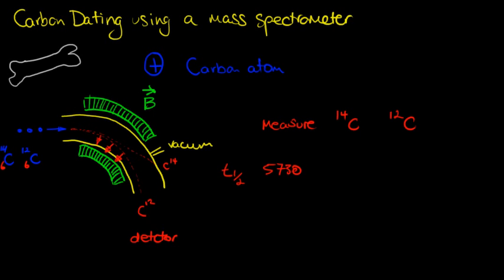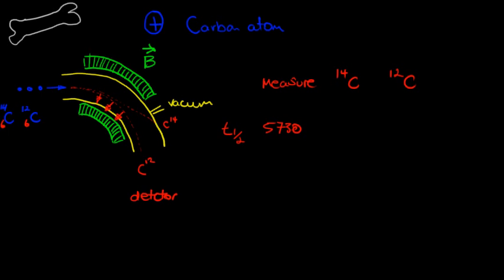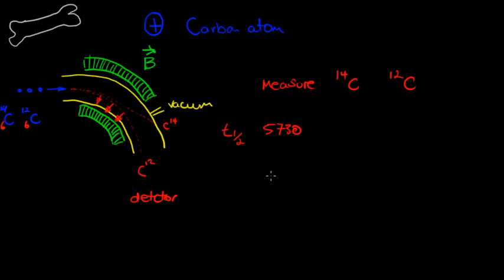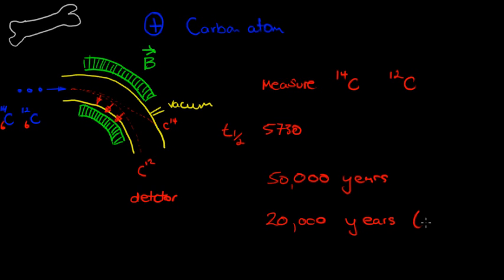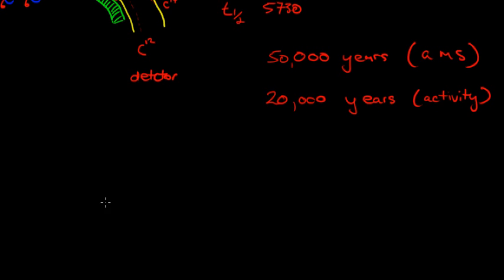This technique is accurate to about 50,000 years, which is much better than the 20,000-year limit using the traditional method of measuring activity. So acceleration mass spectrometry is more accurate and can date samples over a much longer period.